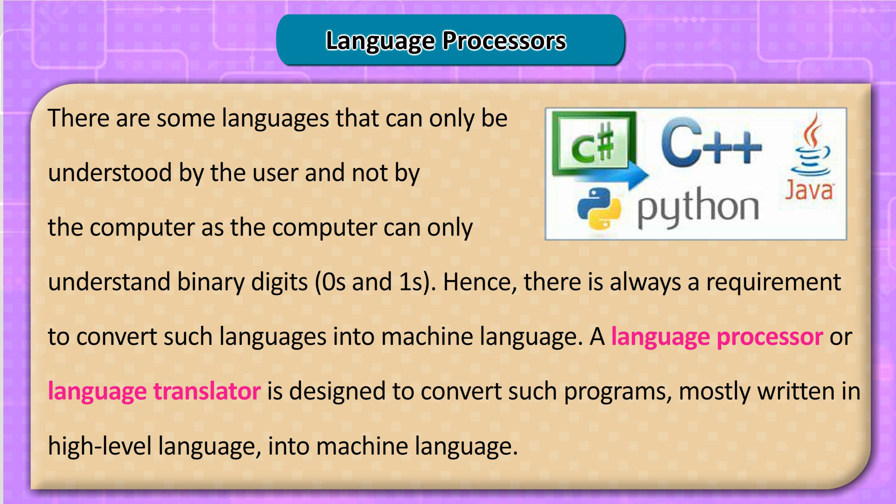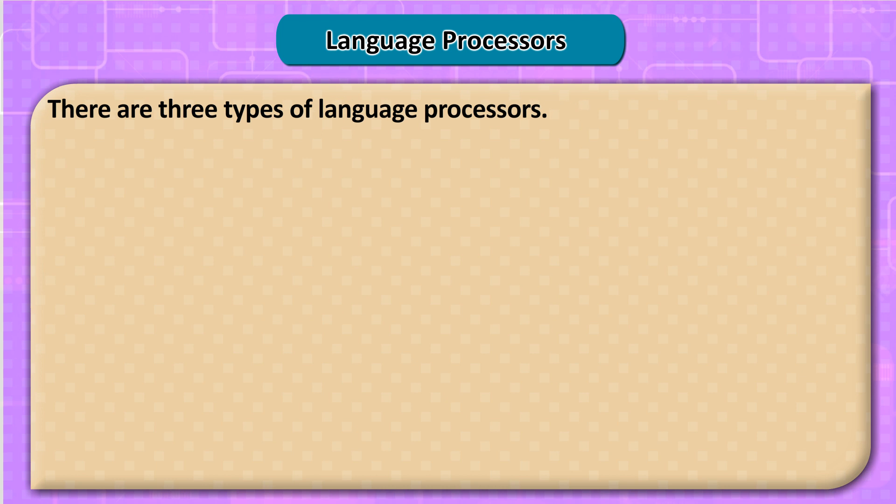Language Processors: Some languages can only be understood by the user and not by the computer, as the computer can only understand binary digits (0 and 1). Hence, there is always a requirement to convert such languages into machine language. A language processor, or language translator, is designed to convert programs — mostly written in high-level language — into machine language. There are three types of language processors.